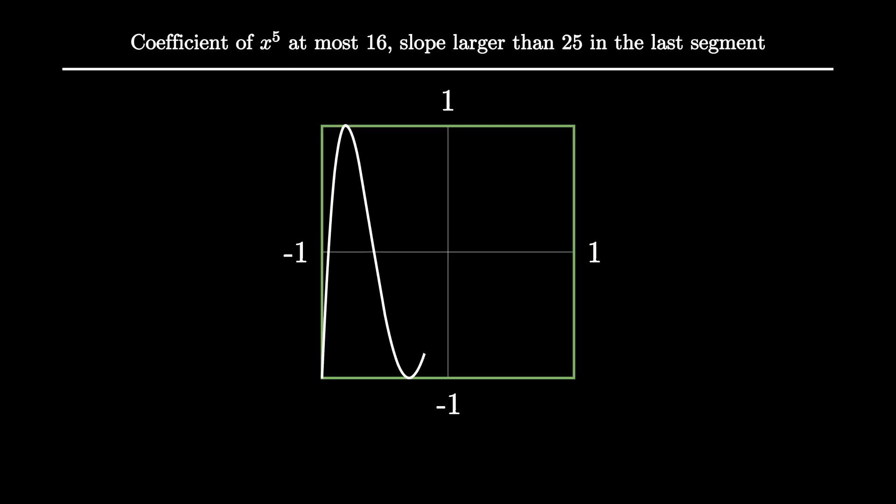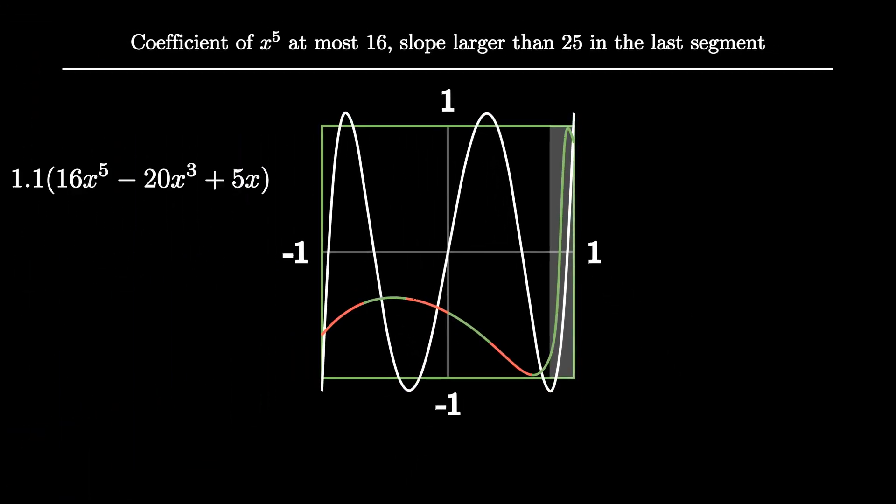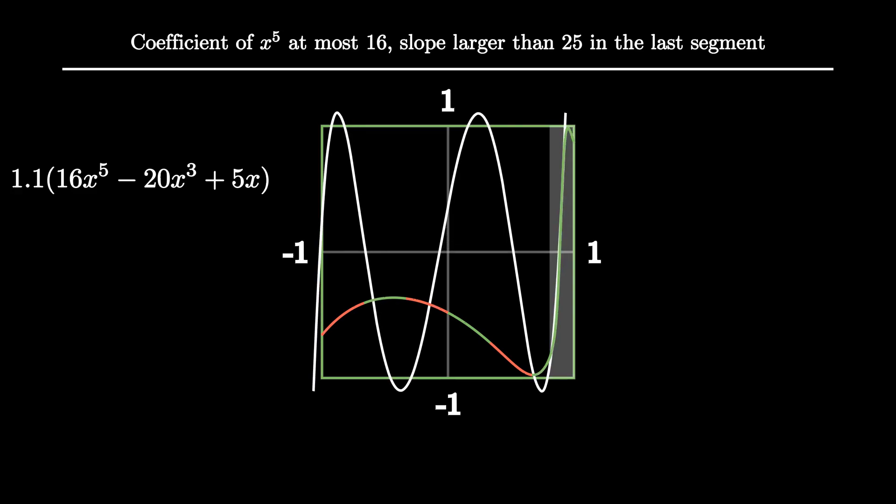So this time the potential contestant has slope larger than 25 somewhere in the last segment. Let's assume it's here. The chef had a neat trick going with forcing 5 intersections, so in a hope to do the same thing, the chef will enlarge itself again. This time it makes sure that its new maximum slope is still smaller than that of the potential contestant. Additionally, the chef slides sideways so that it intersects the contestant at the place where it has a larger slope. This sliding does change the enlarged chef. If it slides 0.1 to the left, it becomes 17.6(x + 0.1)^5 - 22(x + 0.1)^3 + 5.5(x + 0.1).